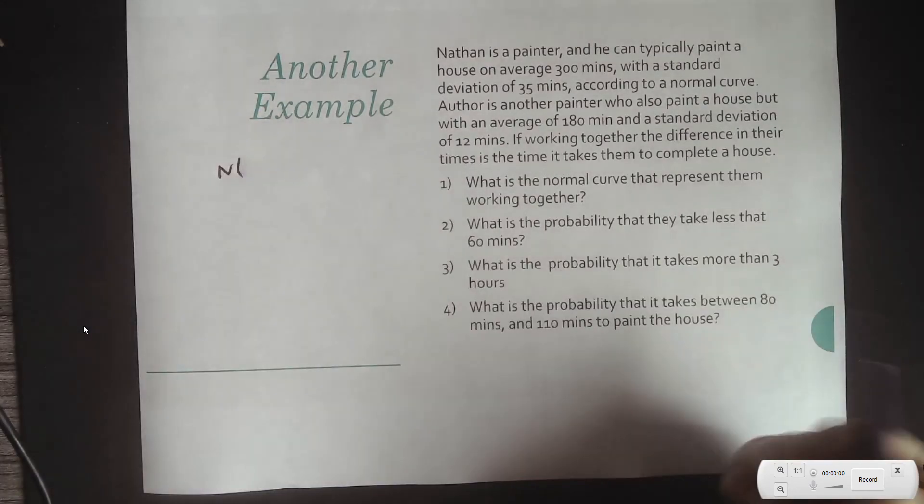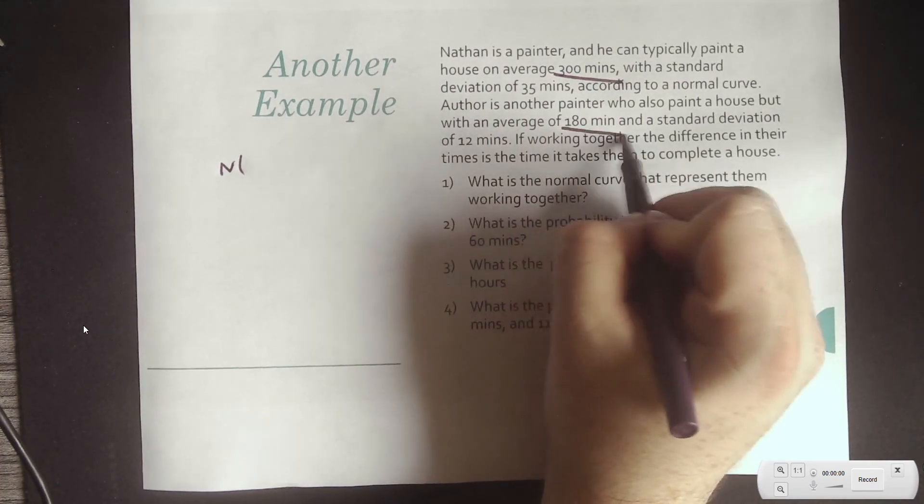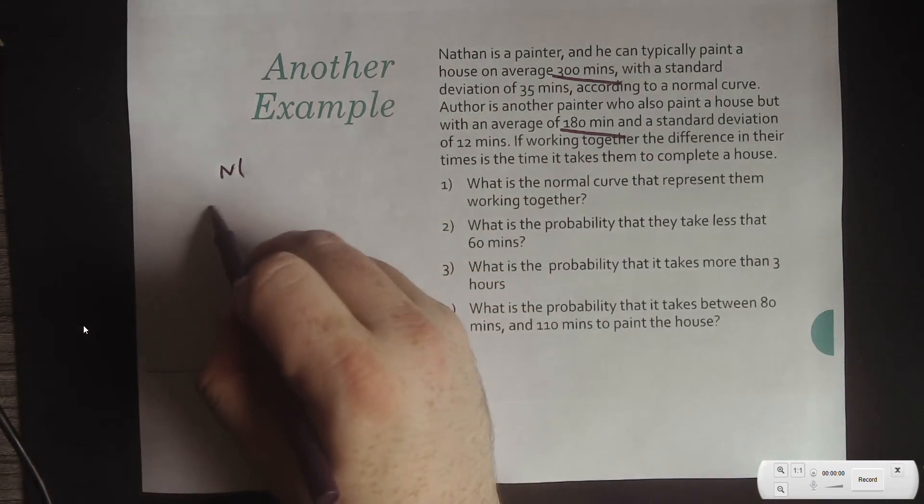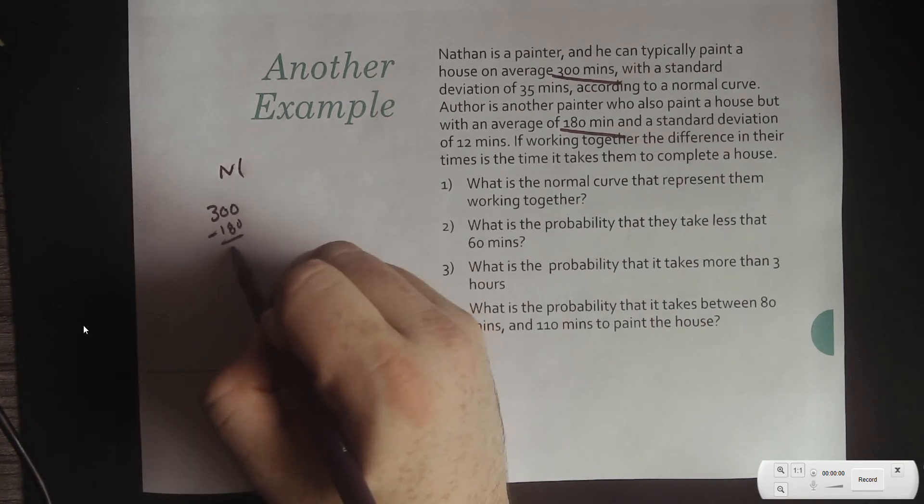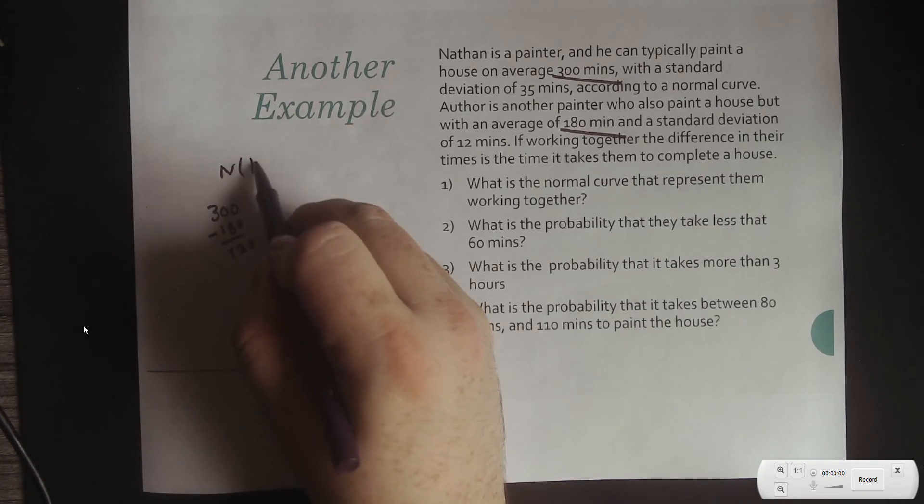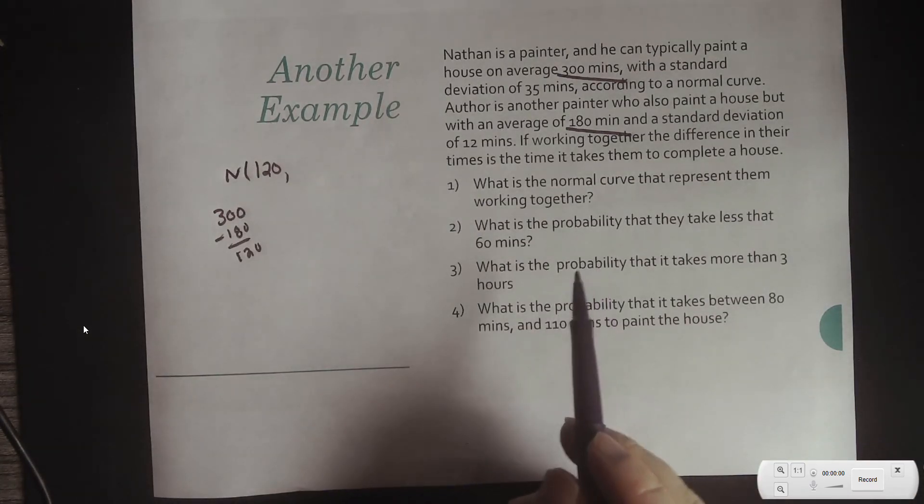So, once again, we have an average of 300 minutes and an average of 180. We want to find the difference between these two. And so, that comes out to be 120. So, 120 is my new average or my new expected value.